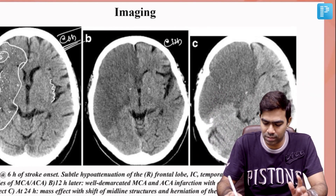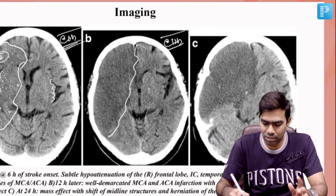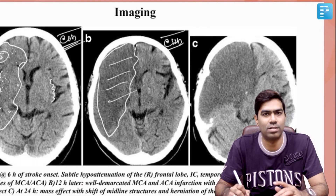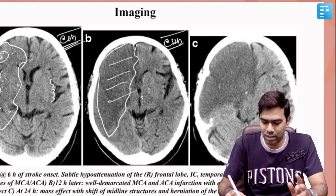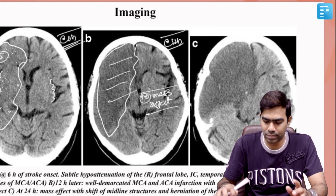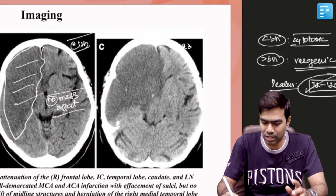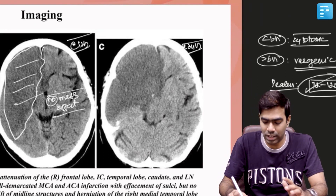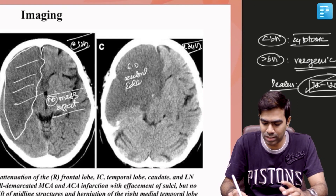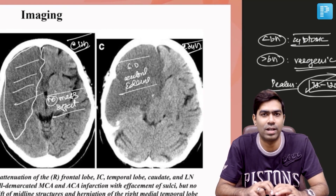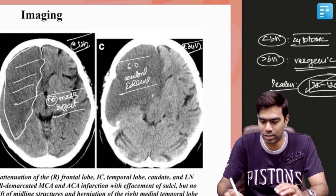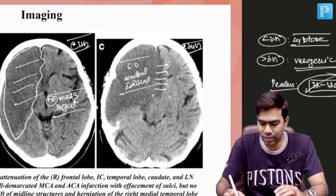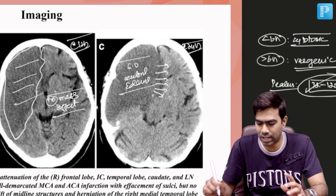By the 12-hour mark, the hypodensity becomes very obvious and unmissable. At this stage, the patient is not showing any mass effect and there is no midline shift. However, the CT taken at 24 hours shows it has transformed into a space-occupying cerebral edema — specifically a malignant cerebral edema causing significant mass effect with midline shift of more than five millimeters.